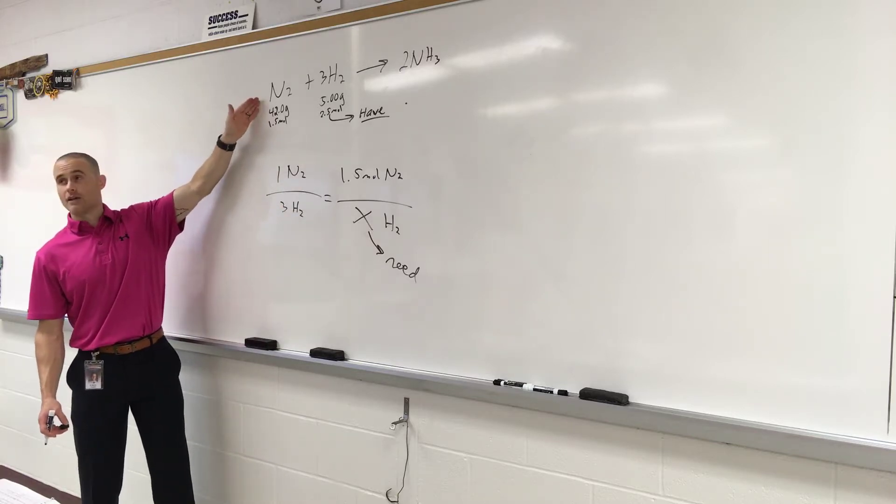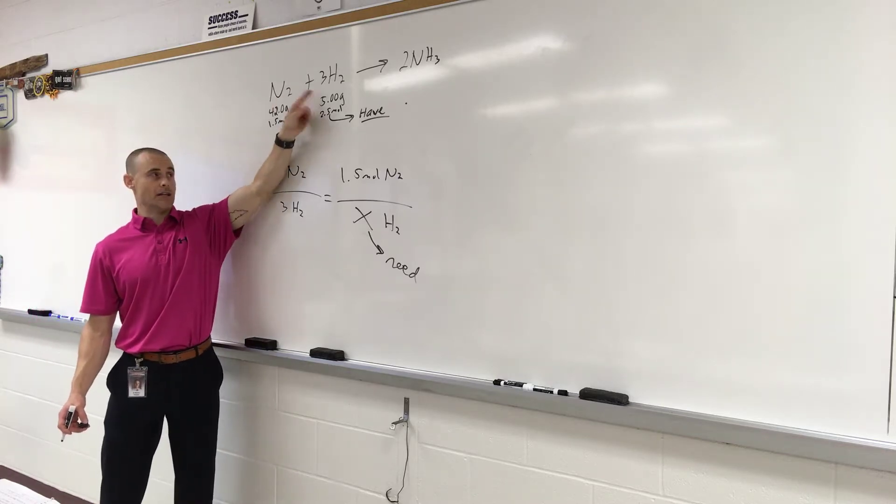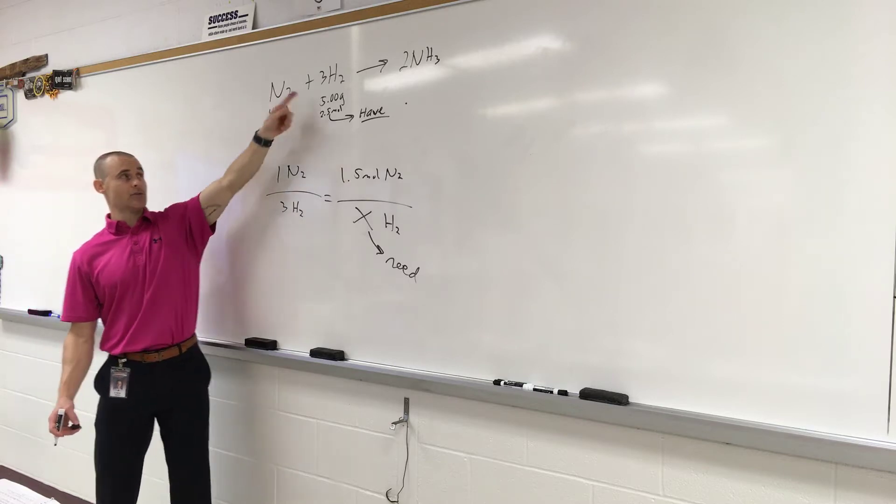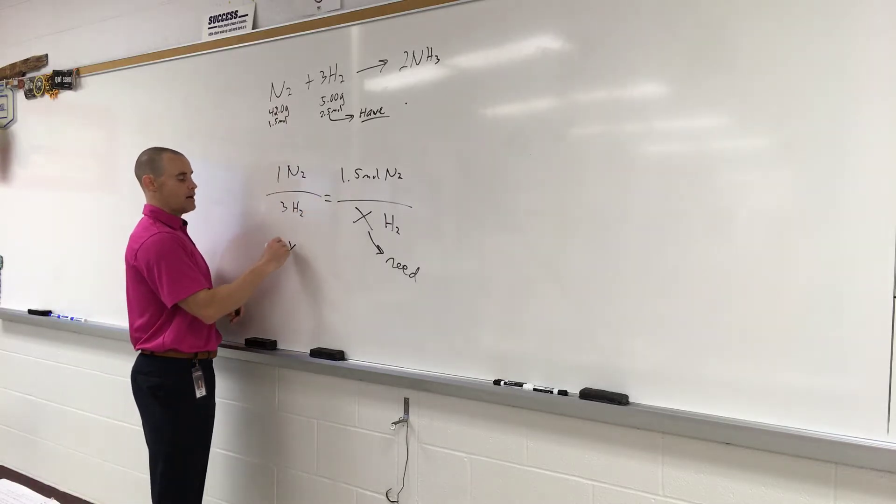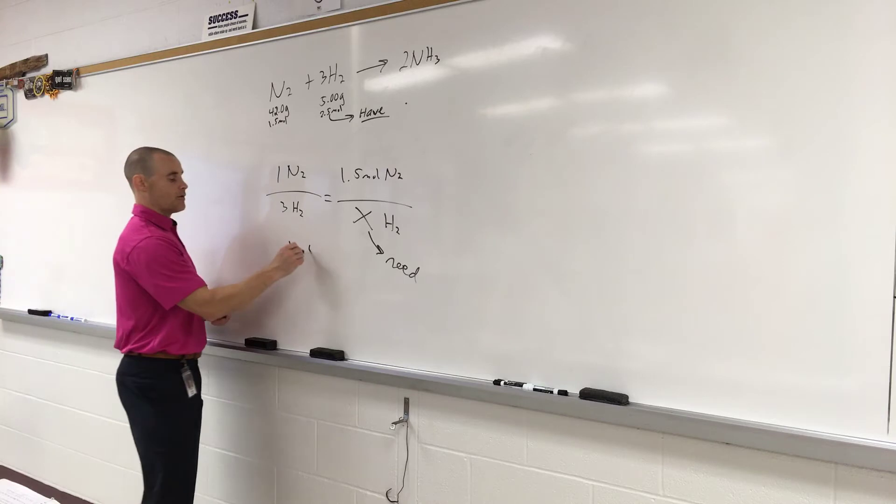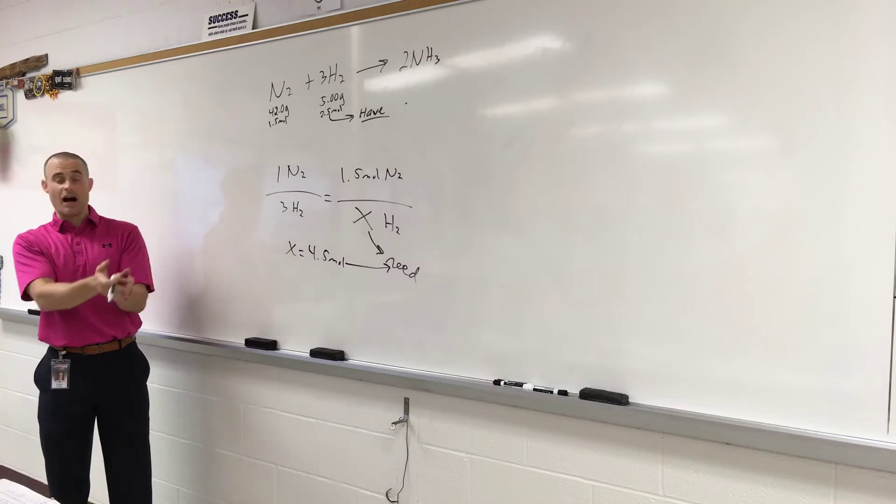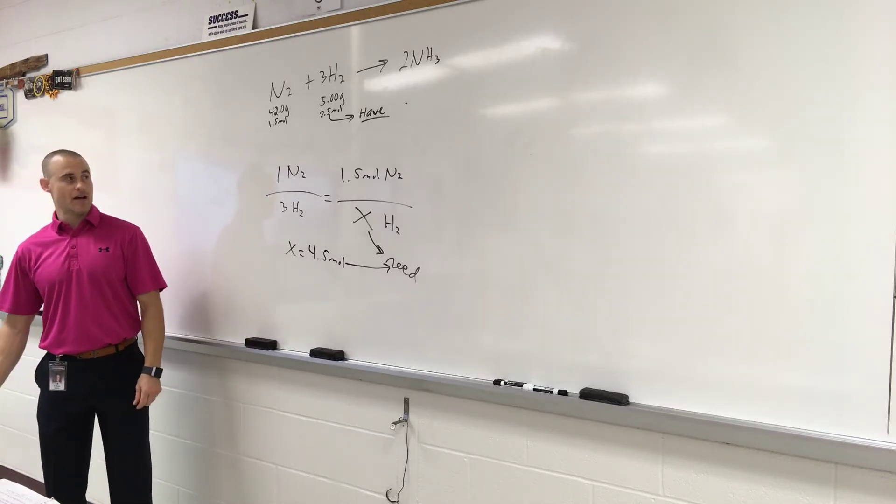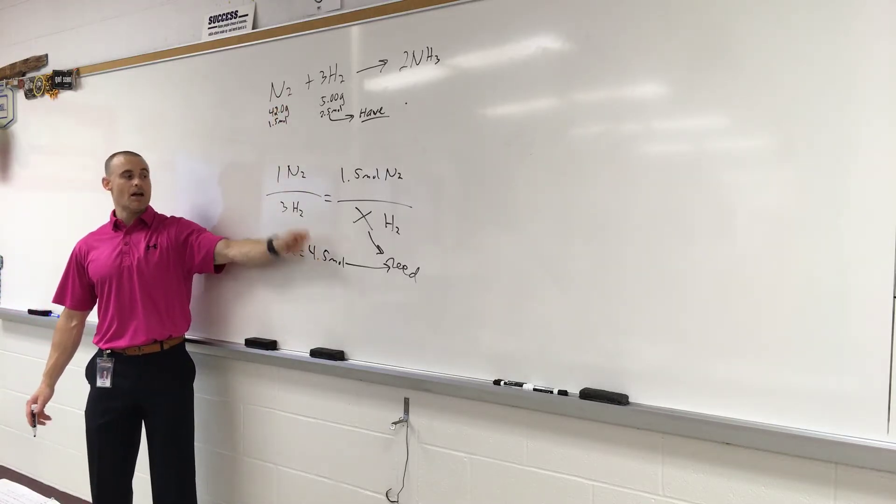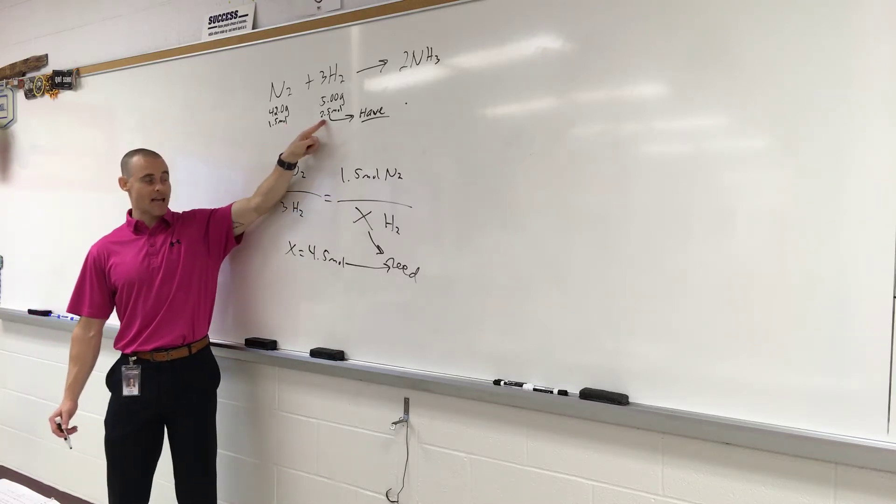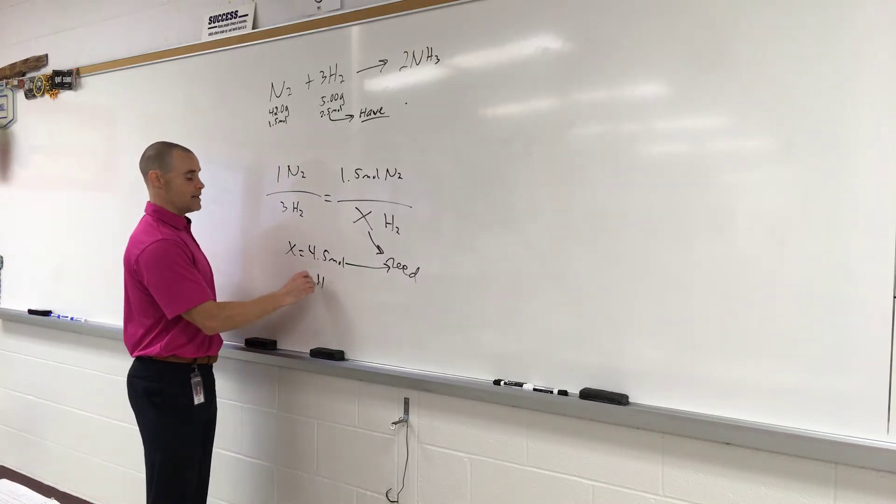This little proportion is telling me how much I actually need. So, if I have 1.5 mols of N2, I need 3 times as much because it's a 1 to 3 ratio. In order for this to react and to work correctly, I need 3 times as much. That's 1 to 3. That's what the whole point of a balanced equation is. So, when I cross multiply, X equals, what's 3 times 1.5? 4.5. So, that's how many mols of hydrogen I need. If I have 2.5, but I need 4.5, I don't have enough. It's going to be depleted. It's going to run out before it reaches that number. That's how I know H2 is limiting. Because you have less than you actually need according to the ratios.